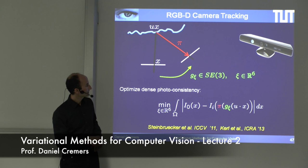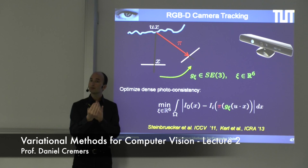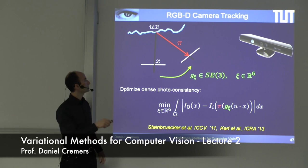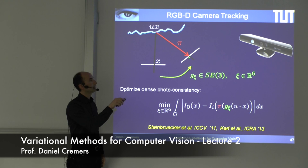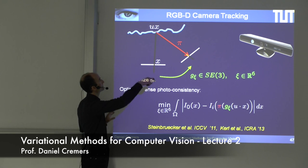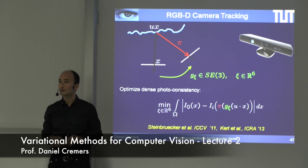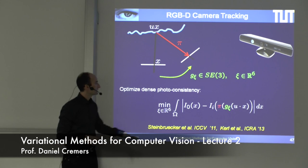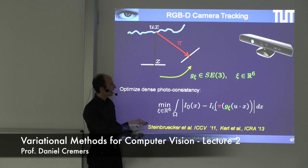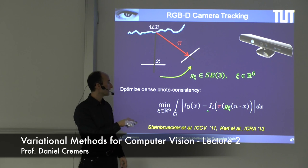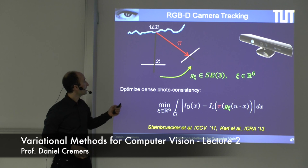The cost function uses both the depth image and the color image. The idea is quite simple: the color at any given pixel x should be the same color at the corresponding pixel after moving the camera, because you are looking at the same 3D point. So i0 is the color at point x in the first image, and i is the color at the corresponding point in the next image.